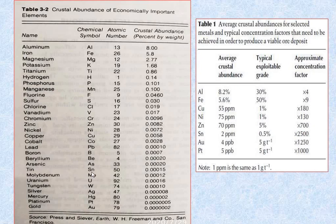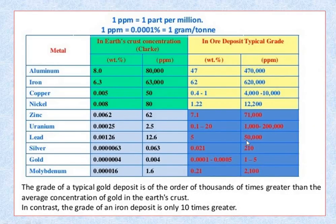The elements which have very least concentration in the crust are very precious minerals. For example, from the earth crust concentration chart given by Keller: aluminum 8%, iron 6.3%, copper 0.005%, nickel 0.8%.